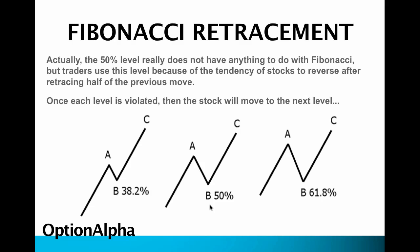The 50% level doesn't technically derive from Fibonacci numbers, but traders use it because of the tendency of stocks to reverse after retracing to that point. Each level that is violated means the stock will move to the next one. If the stock violates the 38.2, the next area of support is the 50% level. If it violates that, it's going to go down further and hit the 61.8.